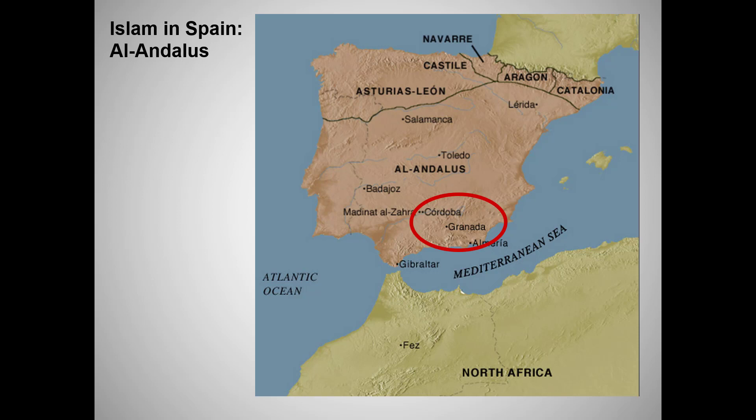Now we move on to El Andalus, or Muslim Spain. If I were offered a trip in a time machine and told I had to go back to the year 1000 CE, I'm pretty sure I'd dial up Cordoba. It was a city of vast learning, exquisite architecture and art, and a cosmopolitan, tolerant environment where Muslims, Jews, and Christians lived in relative harmony, with considerable intellectual and cultural exchange.